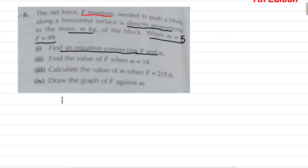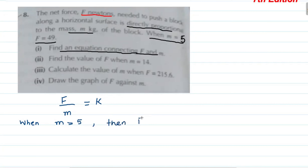If there are two quantities F and M in direct proportion, their ratio is equal to a constant number. Here we have F over M equals K. We can find this value: when M equals 5, then F will be equal to 49.